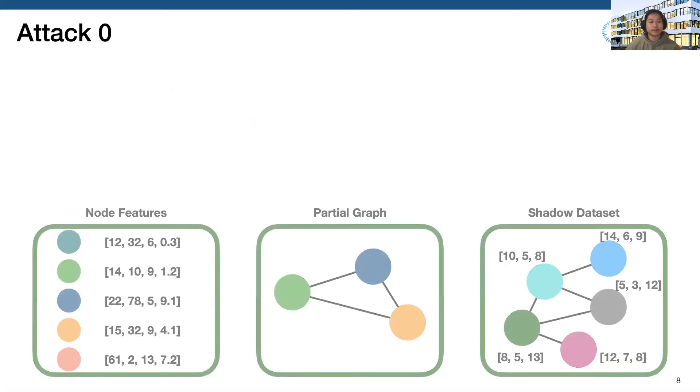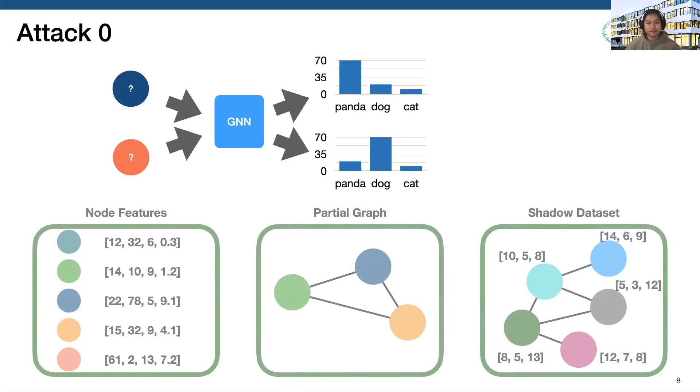The first one is attack zero. In this attack, we have no information about node feature, partial graph, or shadow dataset. Given two node IDs, we use the ID to query the target model, which is a GNN, and we can acquire two posteriors. Then, we can measure the difference between these two posteriors. Concretely, we can use cosine distance, Euclidean distance, correlation distance, etc. Since we have a value, we can do the unsupervised attack.